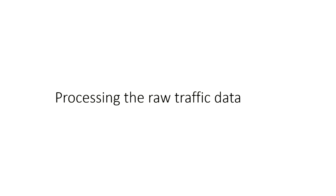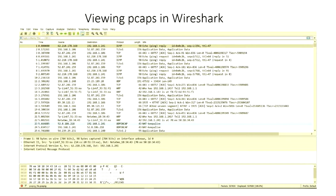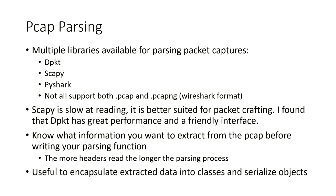How do I use Python to process all this raw traffic data? Using a popular PCAP analysis tool, Wireshark, this is what raw traffic data looks like — it's got packets and it's binary data. There are multiple libraries available for parsing packet captures: deep packet, Scapy, and PyShark. Not all of them support both PCAP and PCAP-NG formats, which can be important because the dataset might contain both. Scapy is really slow, so don't use it for reading large amounts of traffic — it's probably better for packet crafting. Deep packet has pretty good performance and a relatively friendly interface.